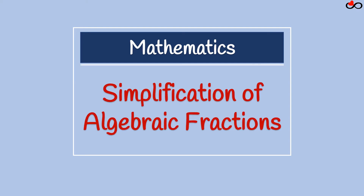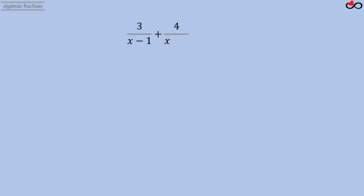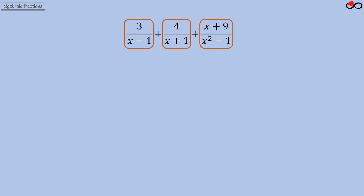In this lesson we talk about simplification of algebraic fractions and will solve an exercise. Consider the expression 3 divided by (x minus 1), plus 4 divided by (x plus 1), plus (x plus 9) divided by (x squared minus 1). The expression is the sum of three algebraic fractions.